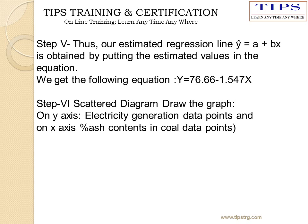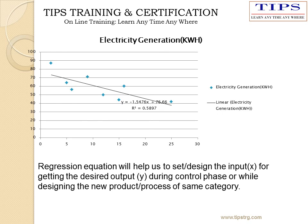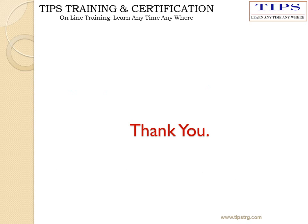Now, plot the graph using a scatter diagram, which can also be done using an Excel sheet. The scatter diagram plotted using this data gives the equation y equals minus 1.5476x plus 76.66, with an R-squared value of 0.5897. Thank you.